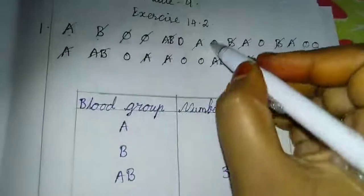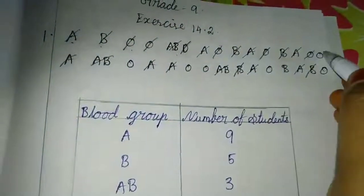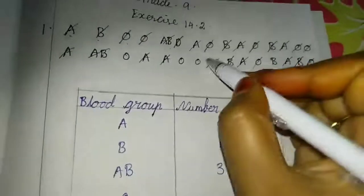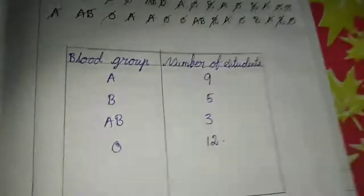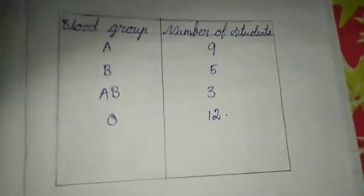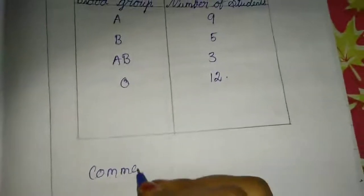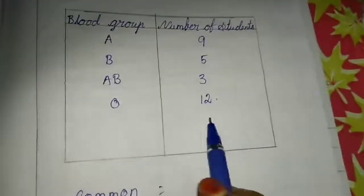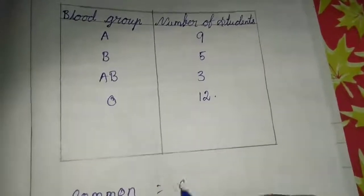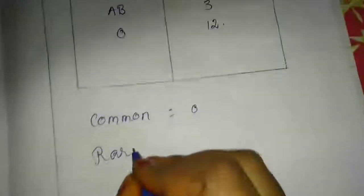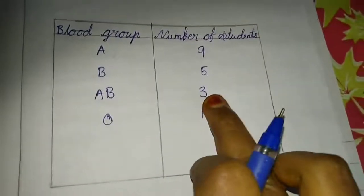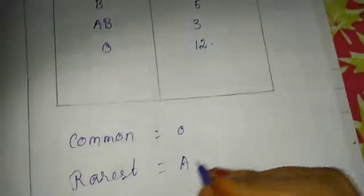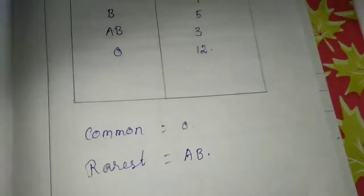Next, blood group O: 1, 2, 3, 4, 5, 6, 7, 8, 9, 10, 11, 12. So O we have 12. This is the frequency distribution table. They also ask the most common blood group — which one we have most? That is 12, so the most common blood group is O. The rarest blood group is AB with only 3, so AB is the rarest. This is the answer for the first problem.